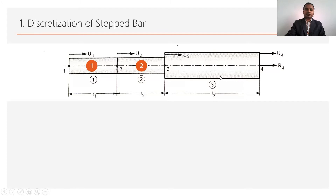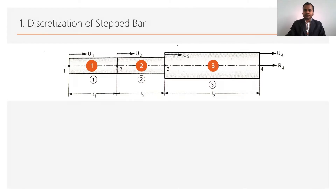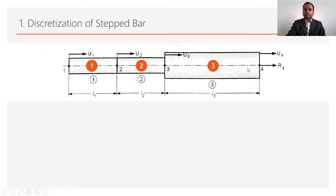We then check the second cross section — there is no force applied there, so this complete cross section will be treated as element number 3. The nodes of element number 3 are node number 3 and node number 4. In total, there are 3 elements and 4 nodes in this numerical.